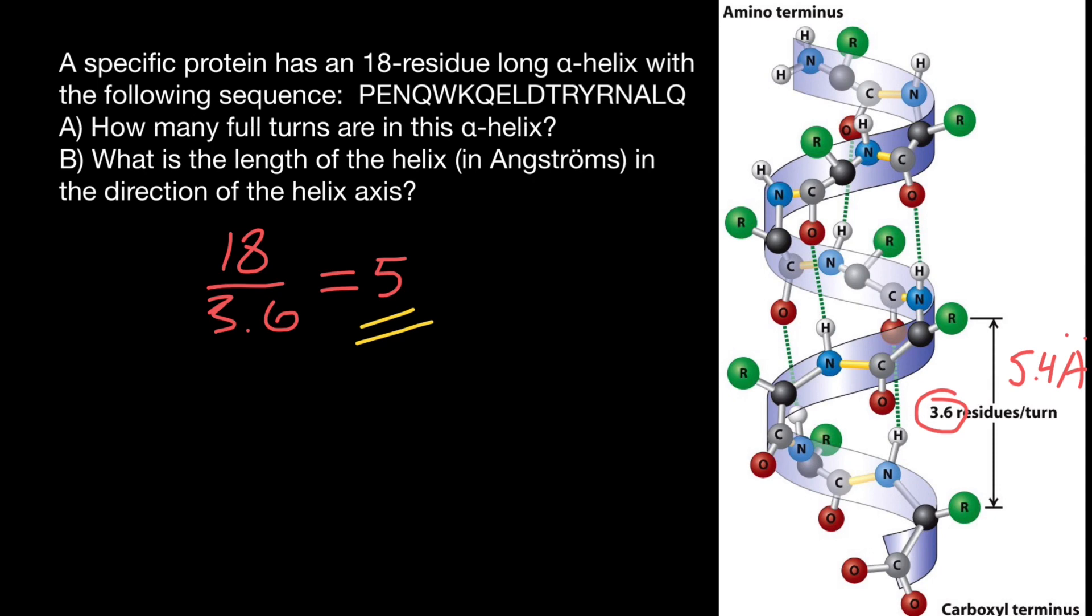So now we can find the length of this molecule. We have to multiply five by 5.4 angstroms per one turn, and we are going to get 27 angstroms. This is going to be the length of this alpha helix.